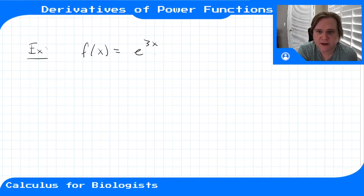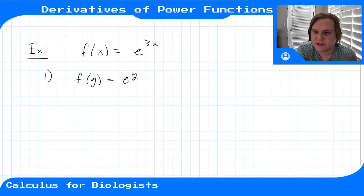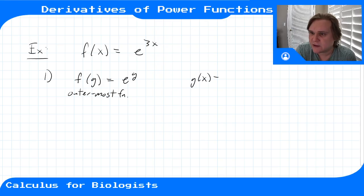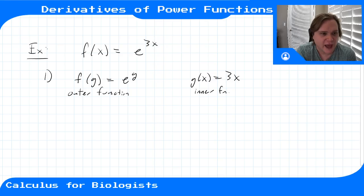Step one is to split the function into a composition. Our outermost function will be f(g) = e^g, and our innermost function will be what's sitting in the exponent: g(x) = 3x. So the outer function is the exponential, and the inner function is the exponent.